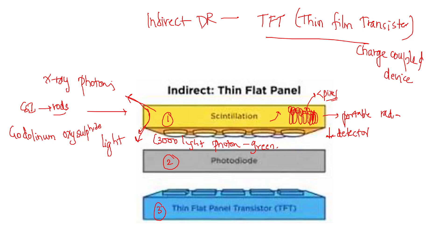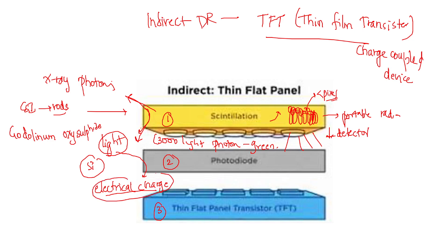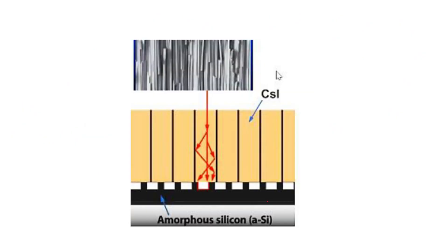A main disadvantage of scintillation is that it produces light in all directions. The photo diode detects this light and converts it into electrical charge. The photo diode is mainly made up of amorphous silicon. The electric charge produced by the photo diode is then processed by the thin flat panel transistor, which detects this electric charge.